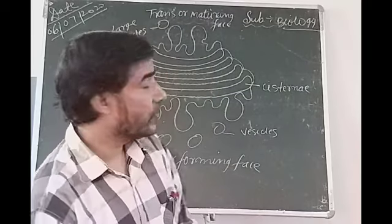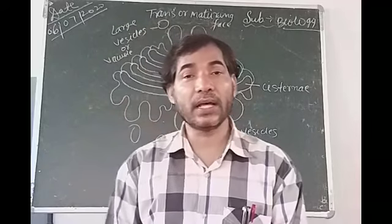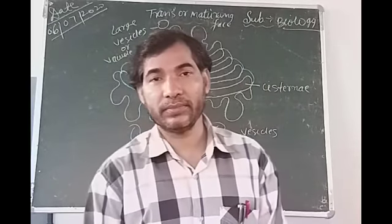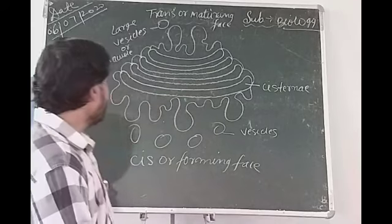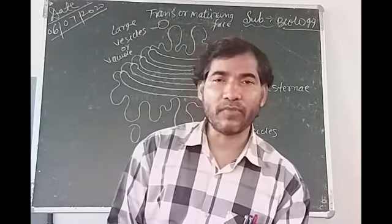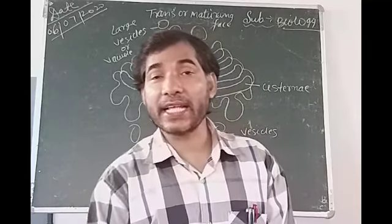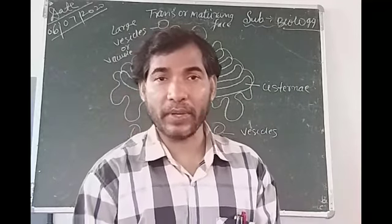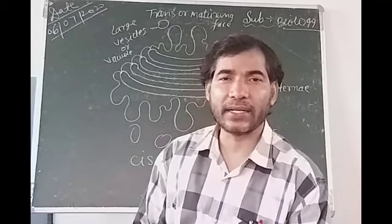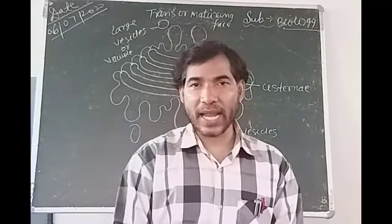You should know, Golgi apparatus was discovered by Camilo Golgi, from the nerve cell of an owl. This Golgi apparatus is present in all types of eukaryotic cells, except mature RBC and the sperm of the mammal. It is absent in all prokaryotic cells like bacteria, blue-green algae, etc.